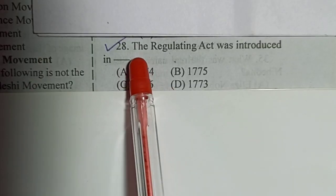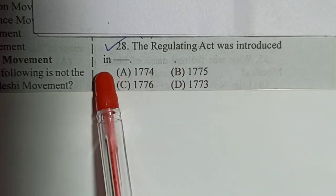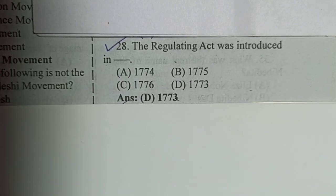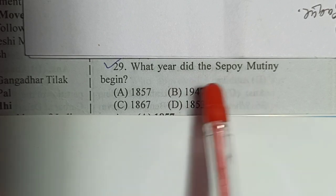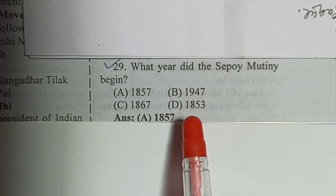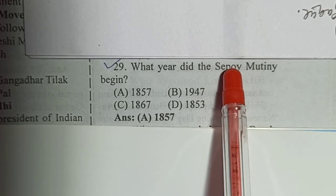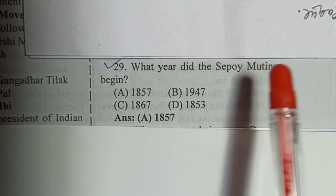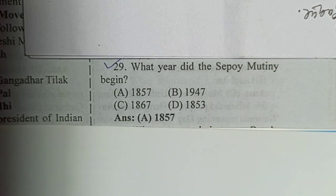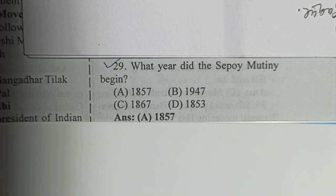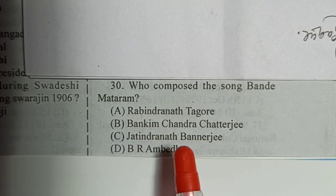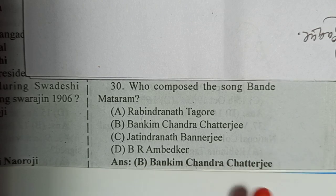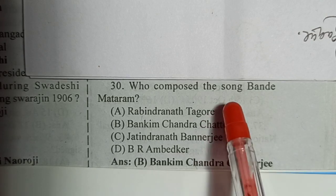The Regulating Act was introduced in the year 1773. In which year did the Sepoy Mutiny begin? The Sepoy Mutiny began in the year 1857. The Sepoy Mutiny is also called the First War of Independence or the Revolt of 1857. Question number 30: Who composed the song Vande Mataram? The song Vande Mataram was composed by Bankim Chandra Chatterjee. This is very important — you have to remember that Bankim Chandra Chatterjee composed the song Vande Mataram.